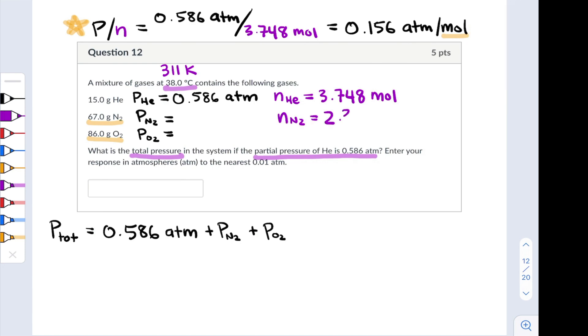Let's calculate the numbers of moles of N2 and O2 based on these masses and get the partial pressures from there. For nitrogen we end up with 2.392 moles, and for oxygen we end up with 2.688 moles.